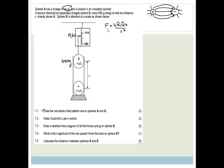Then it says state Coulomb's law in words. So F is equal to K Q1 Q2 over R squared. That's Coulomb's law. Obviously you can't write that. You need to say that the force of attraction or repulsion between two charged objects is directly proportional to the product of their charges and inversely proportional to the distance between their centers squared.